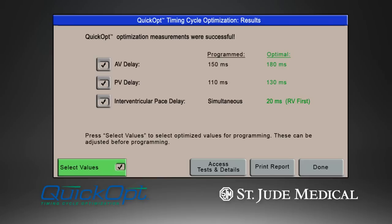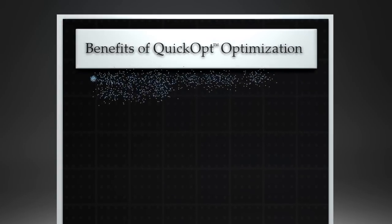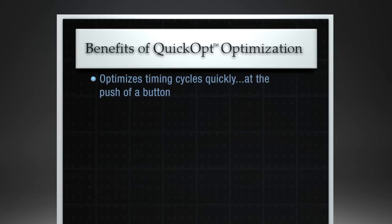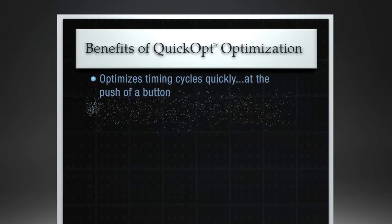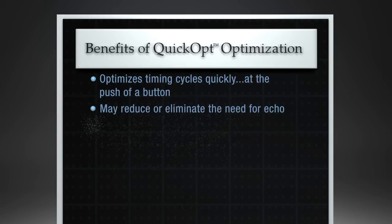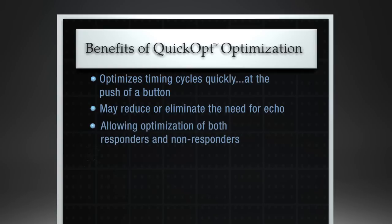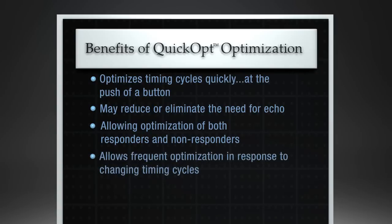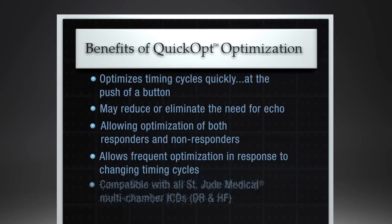No more time-consuming echoes. No more leaving out those who respond to CRT therapy, since QuickOpt timing cycle optimization can be performed on both non-responders and responders alike. In summary, the key benefits to QuickOpt optimization include: optimizing timing cycles quickly at the push of a button; reducing the need for echo; allowing optimization of all patients, not just non-responders; allowing frequent optimization in response to changing timing cycles; and backward compatibility with all St. Jude Medical multi-chamber ICDs.